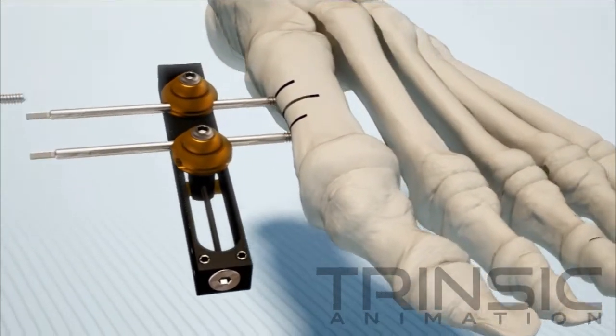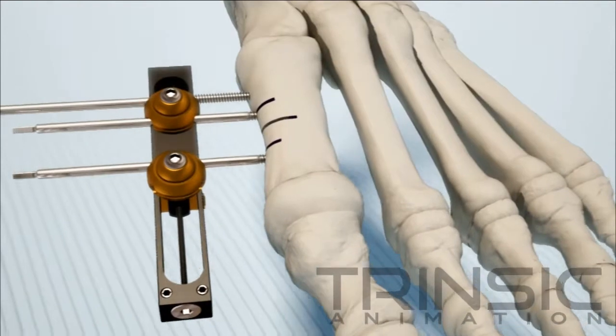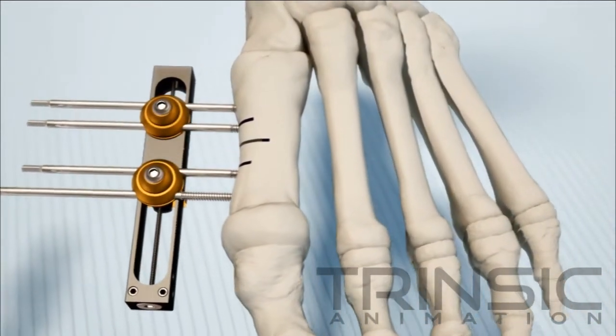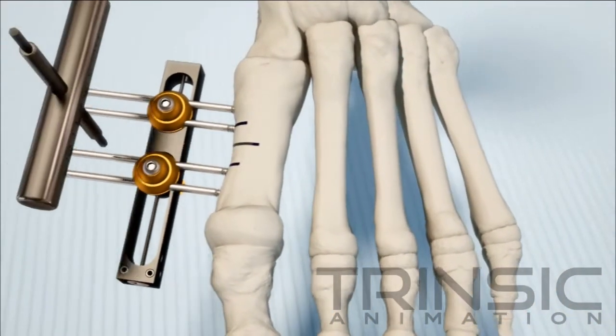Introduce the remaining two half-pins using the rail itself as a template, adjusting the clamp openings as necessary. Avoid excessive loosening of the clamps.